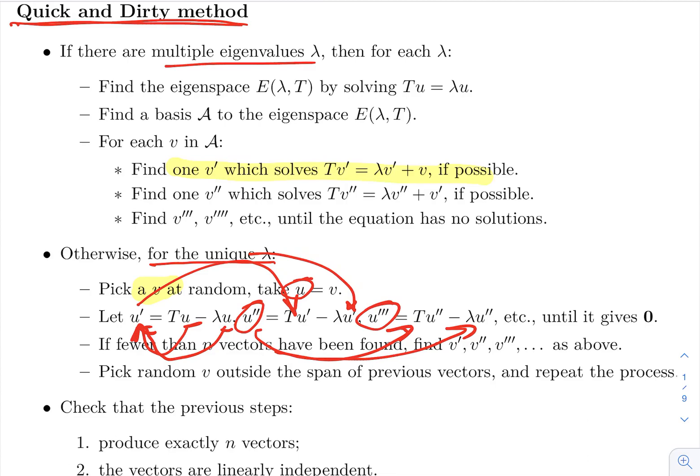Can we keep going forever? No, because T minus lambda times the identity—we have seen this already—it's nilpotent. So eventually this will give you zero. When it gives you zero, you stop.